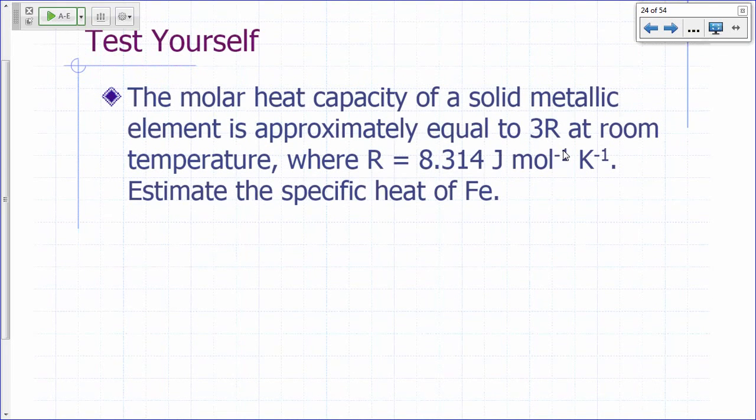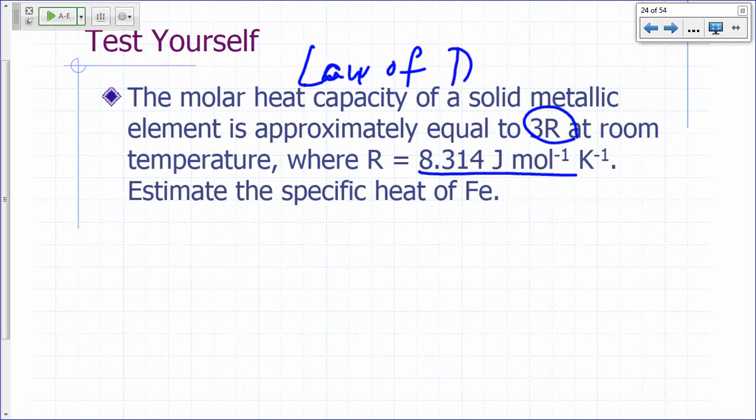The molar heat capacity of a solid metallic element is approximately equal to 3R at room temperature, R being the gas constant, 8.314 joules per kelvin per mole. This is known as the law of Dulong and Petit. And it's a good way to determine the specific heat. A lot of times we're interested in the specific heat. But this is a very good number to remember, but this is per mole.